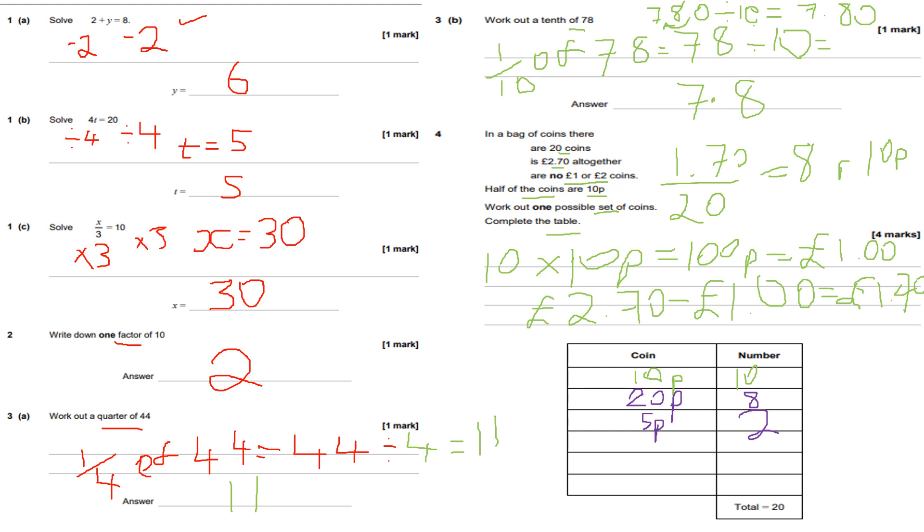Take it off from 2.70, I get one pound 70. 1.70 divided by 20, you get 8 20p coins, remainder 10p. 20p into one pound 70 goes 8 times: 20, 40, 60, 80, a pound, one pound 20, one pound 40, one pound 60. Goes in 8 times, remainder 10. And the remaining 10p goes with the two 5p coins, because the two 5p coins makes that 10 pence coin. Two lots of 5: 5 plus 5 is 10, or 2 times 5 is 10, or 5 times 2 is 10. Adding that all up together, you get two pounds 70. And that's my answer for question number four. Sorry about going over the time I said at the start, but hopefully that makes sense.